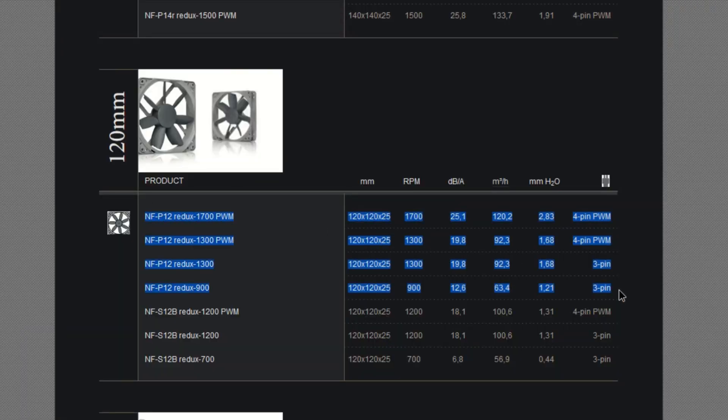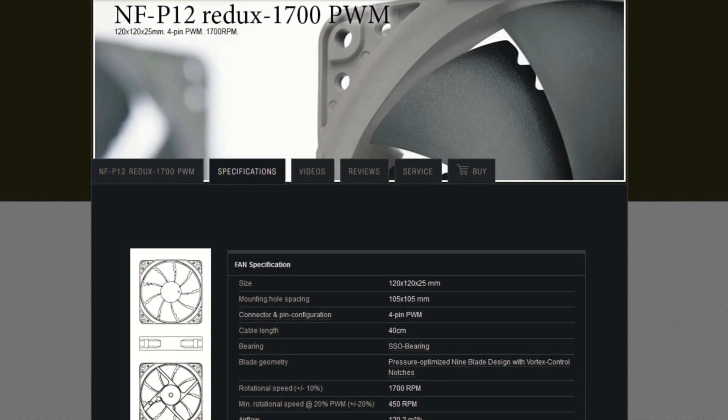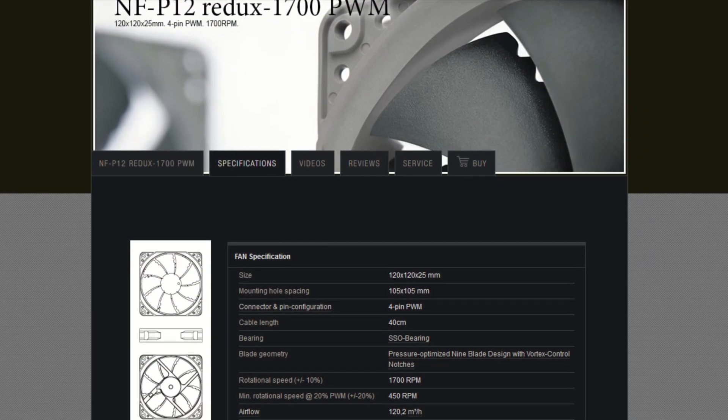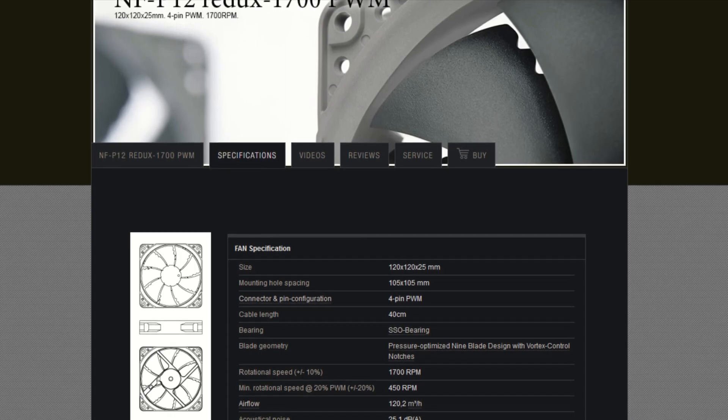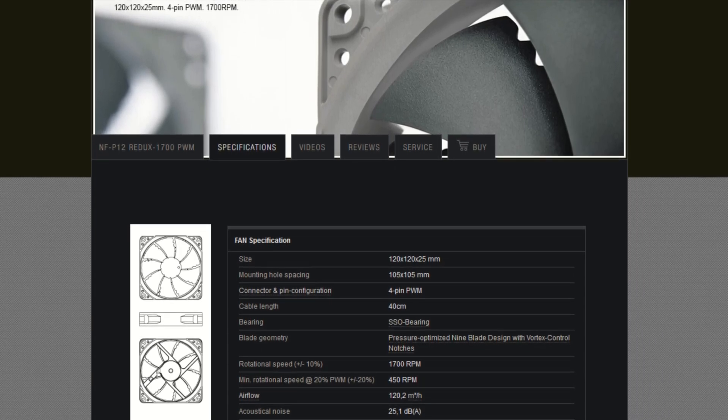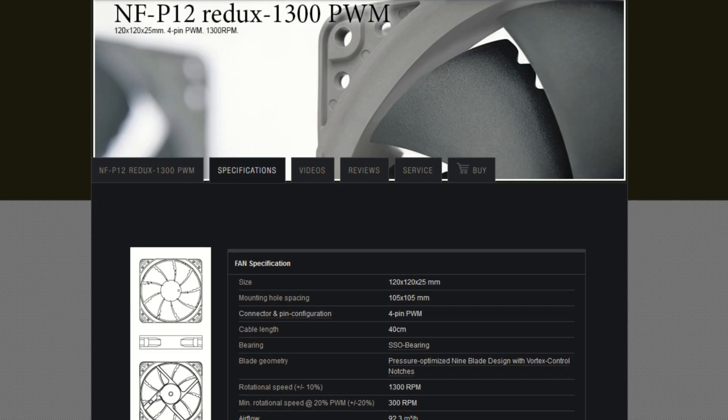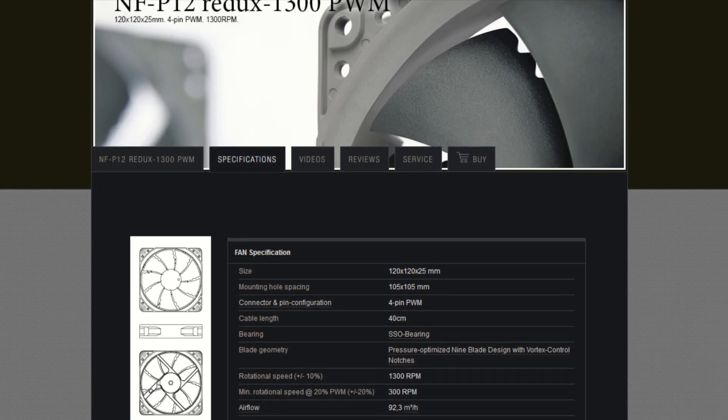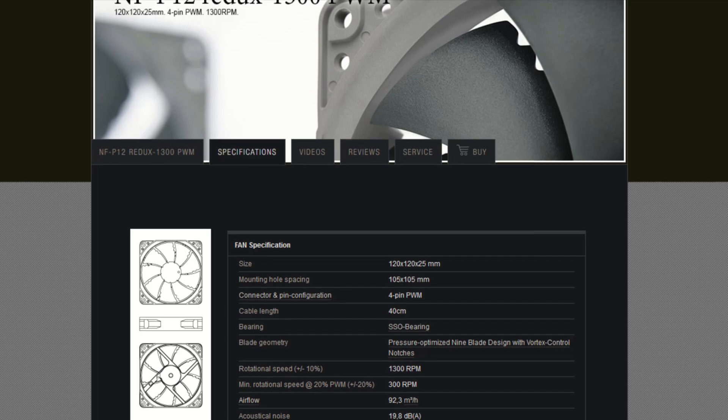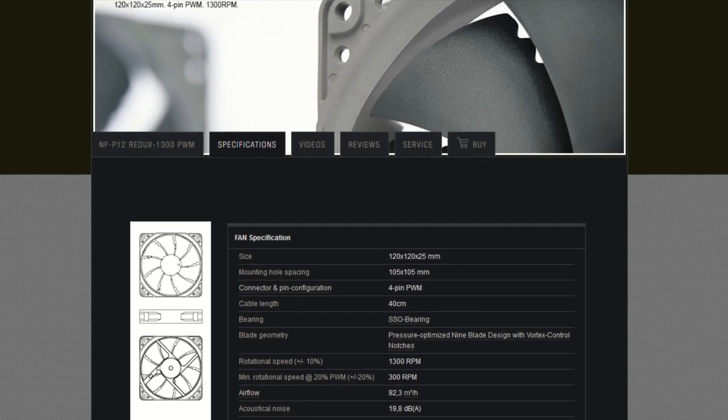There are four 120mm models in Noctua's P-Series. The NF-P12 1700 PWM, which has an RPM of 1700 and a PWM connector. There's the NF-P12 1300 PWM, which has an RPM of, you guessed it, 1300 and a PWM connector.